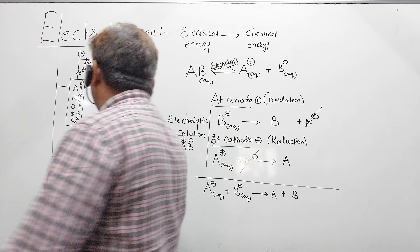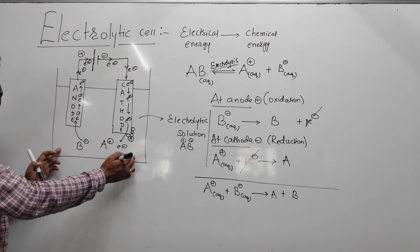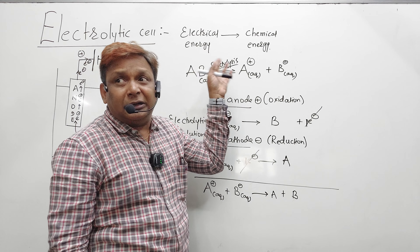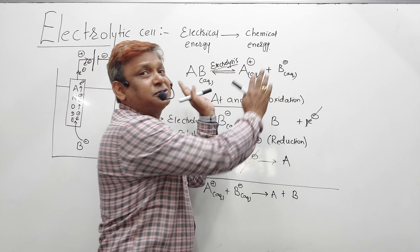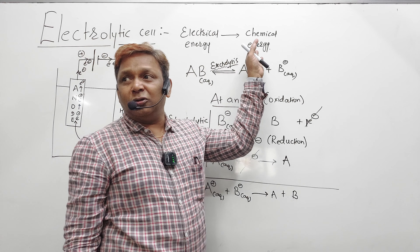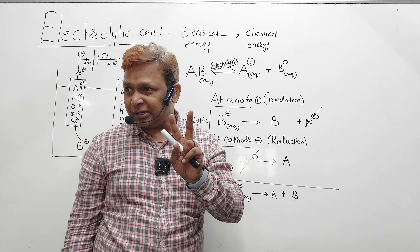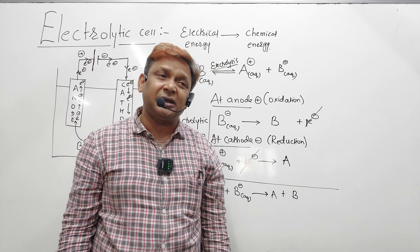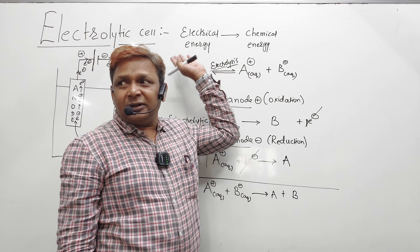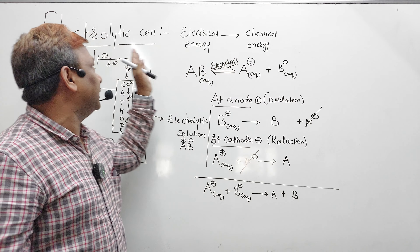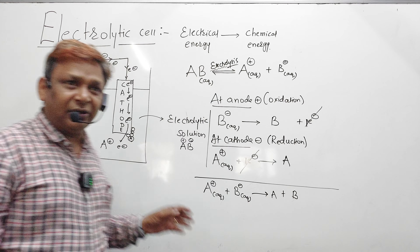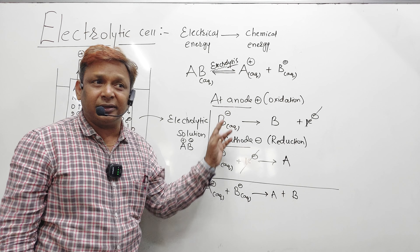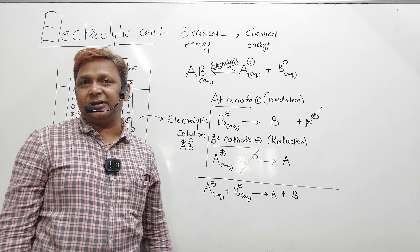So in this process you pass current and the compound decomposes — that electrical energy stored in the ions is converted into chemical energy. To summarize: a galvanic cell converts chemical energy into electrical energy, and an electrolytic cell converts electrical energy into chemical energy. The flow of electrons is from anode to cathode. Oxidation occurs at the anode and reduction at the cathode.